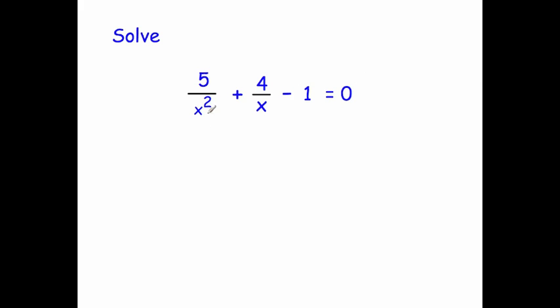Now as you can see we've got our x squared and x on the denominators and it'd be useful if they weren't. So what we're going to do is multiply each term by x squared. Let's see what that gives us.